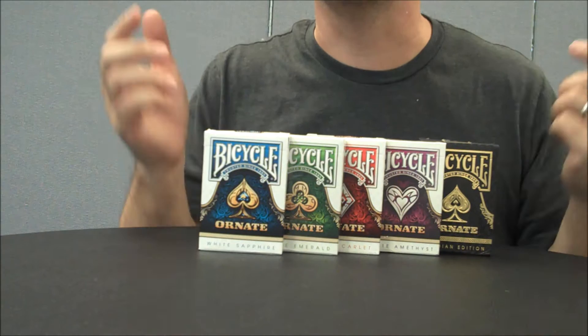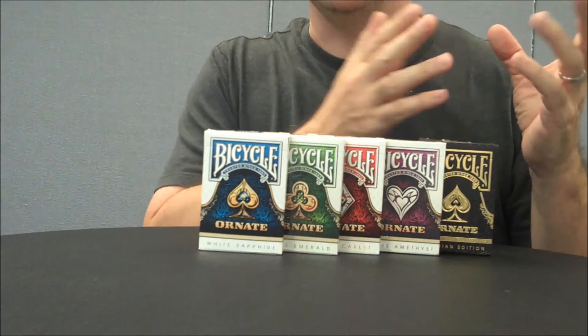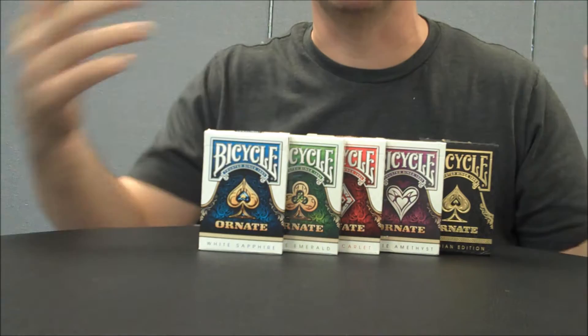As you can see, this series came in five different colors. This was a Kickstarter that House of Playing Cards did, HOPC, and they came in both branded and unbranded sets. There was Scarlet, Sapphire, Emerald, Amethyst, and the Black Obsidian, which was a stretch goal.